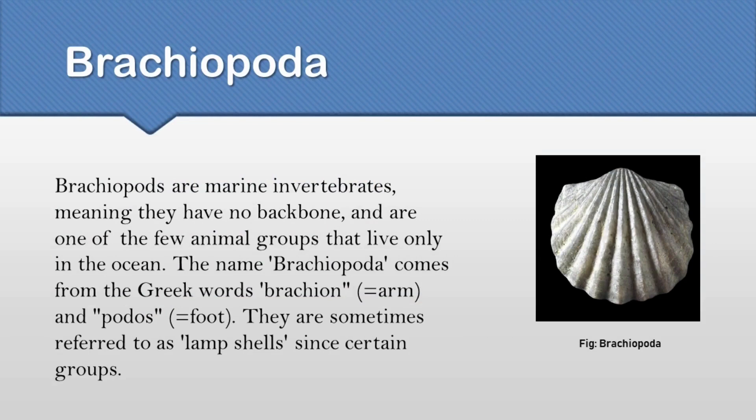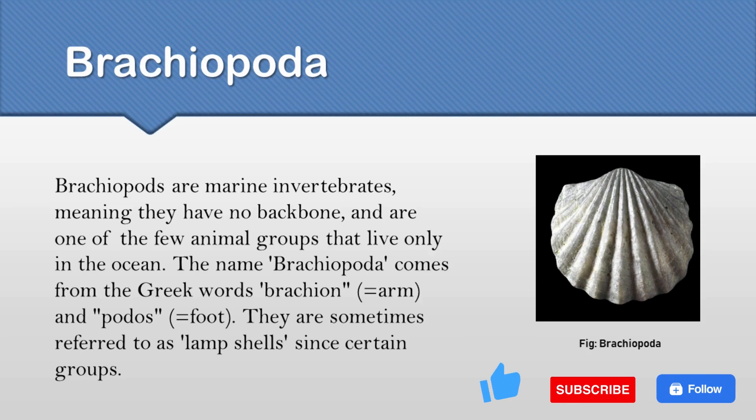First of all, what is a Brachiopoda? Brachiopod is a phylum. The organisms which are characterized by arm and foot are known as Brachiopods. The word Brachiopods comes from the Greek words Brachion and Podos, which mean arm and foot respectively. They have no backbone and they are exclusively marine and sessile. That's why they are known as marine invertebrates.